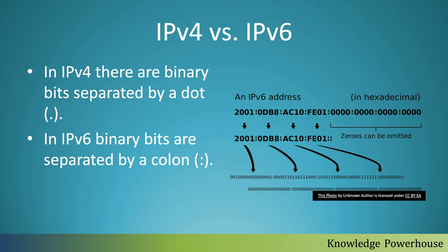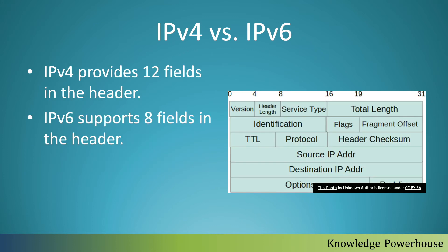In IPv6, there are groups of hexadecimal numbers — you can see some letters in there as well — and these are separated by a colon. There are many more possible addresses in IPv6. This was driven mainly by the world of IoT, internet of things, where there was a demand for a large number of IP addresses.